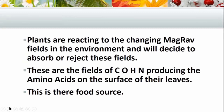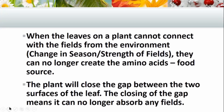These are the fields of your carbons, oxygens, hydrogens, and nitrogen, producing the amino acids on the surface of their leaves. And this is the food source of the plants — it's this amino acid. We're all eating amino acids in different forms: when we are eating meat from another animal, that meat is in an amino acid form; if we are eating plants, it's also in an amino acid form. So just like we eat food which is all amino acid based, so the plants are also eating — absorbing the fields — food which is amino acid based. When the leaves on a plant cannot connect with the fields from the environment, we get a change in the season, which is a change in the strength of the fields. They can no longer create the amino acids or the food source on the surface of their leaf, because of the different field strengths — they have to find a match.